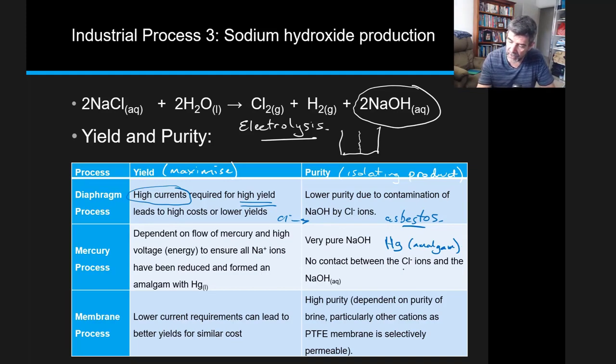This meant much less contact with chloride ions from the original brine, giving us a very high purity product. The problem is that it uses mercury, which has implications for both humans and the environment. We also needed all sodium ions to be reduced, which increased costs to increase yield.